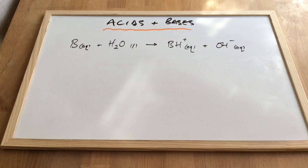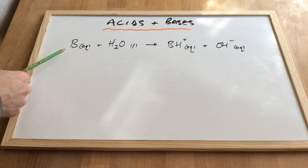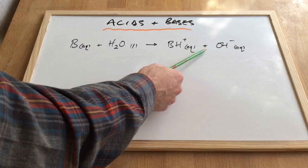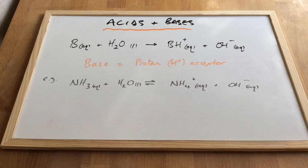Moving over to bases now — bases are the chemical opposites of acids. So if an acid is a proton donor, a base is going to be a proton acceptor. You can see in this equation the base is accepting an H+ ion from the water, so it becomes the BH+ ion, and we're left with an OH- ion, a hydroxide ion. So the Brønsted-Lowry definition of a base is that it's a proton acceptor.